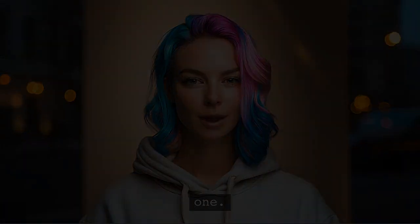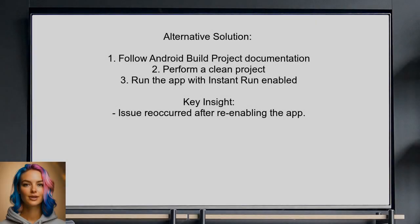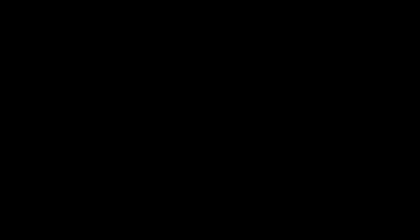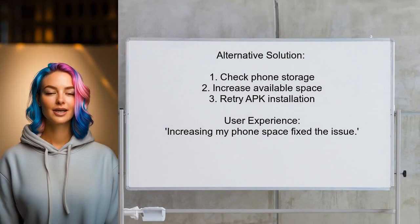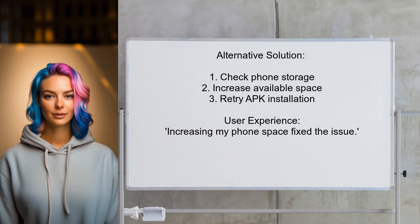An alternative solution shared by another user involves following the build project documentation from Android. They found that after their initial fix, the problem returned when they re-enabled the app. However, by performing a clean project, they were able to run the app successfully with instant run enabled. Yet another user found that their phone was low on storage space, and by increasing the available space on their device, they were able to resolve the installation error.